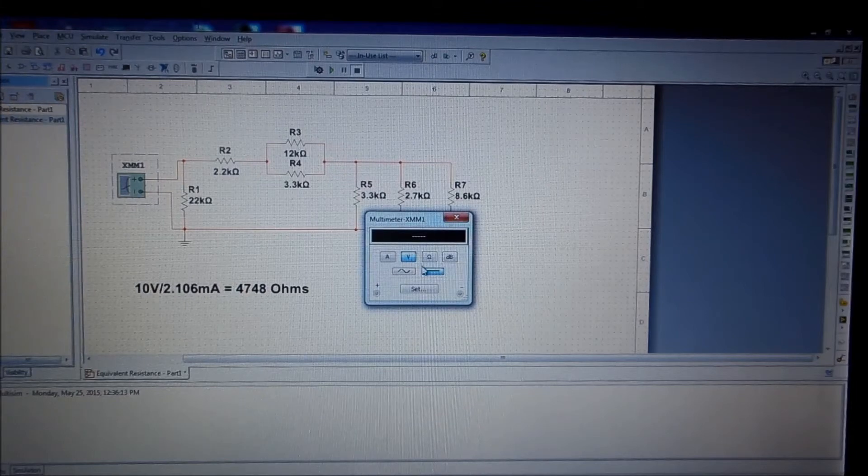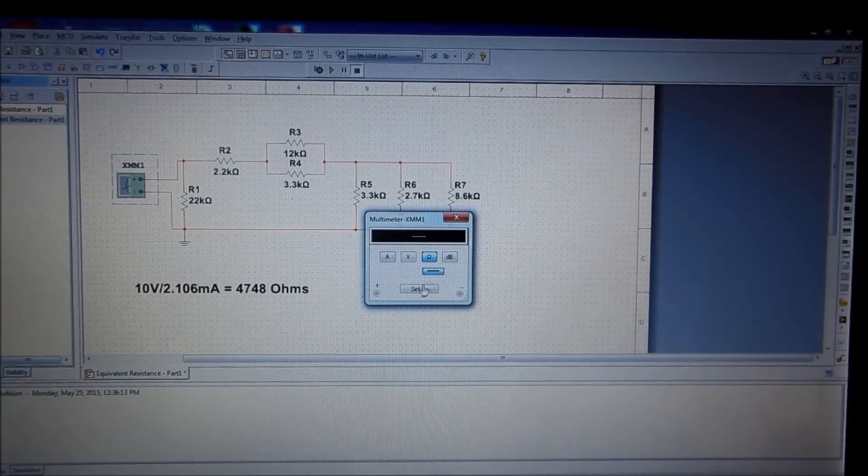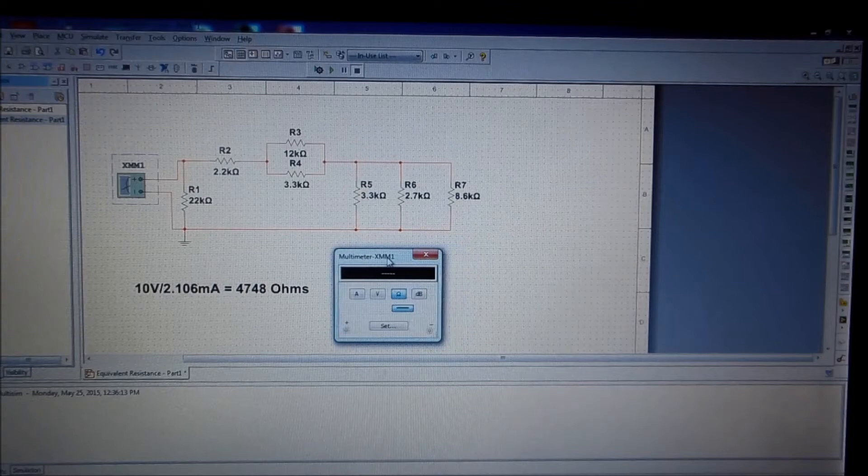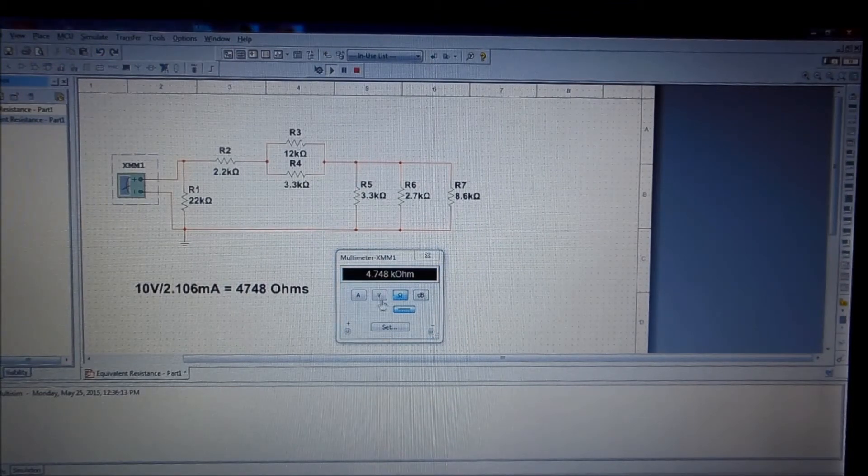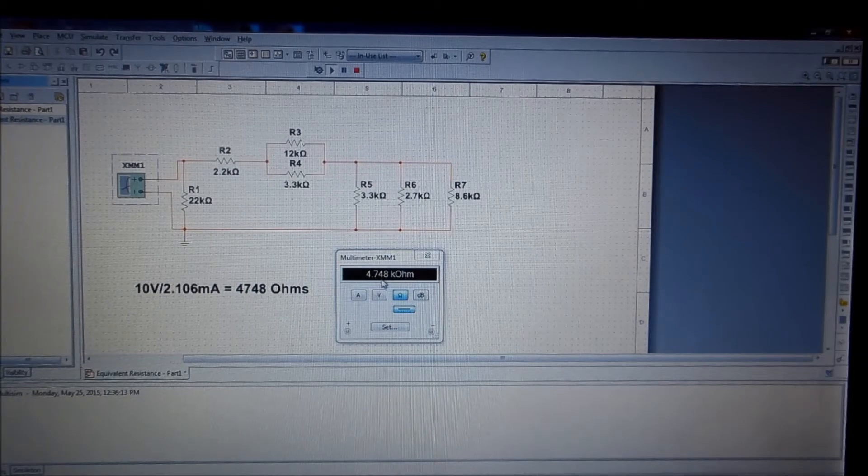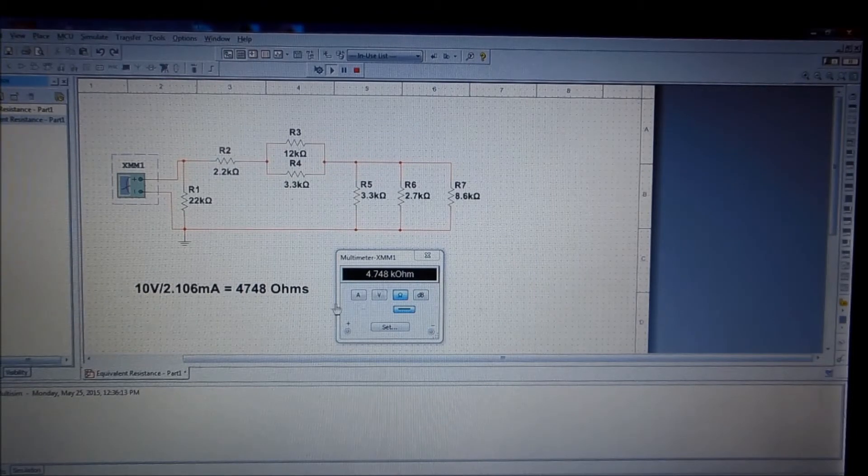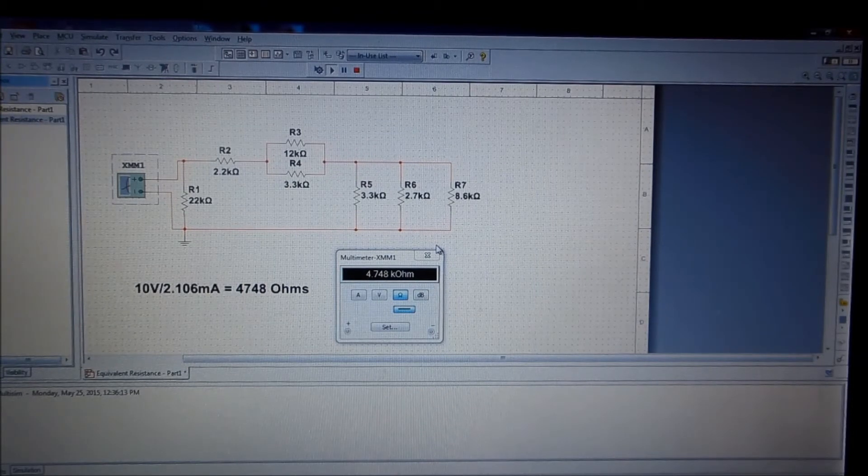And we'll set it up to read ohms, move it out of the picture a little bit, and we'll turn it on. And we get 4.748, which is 4748 kiloohms.